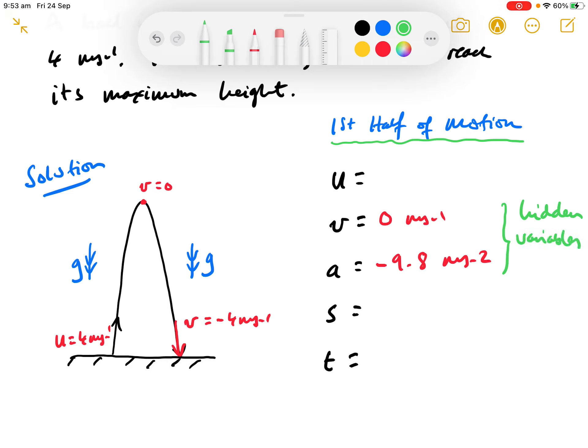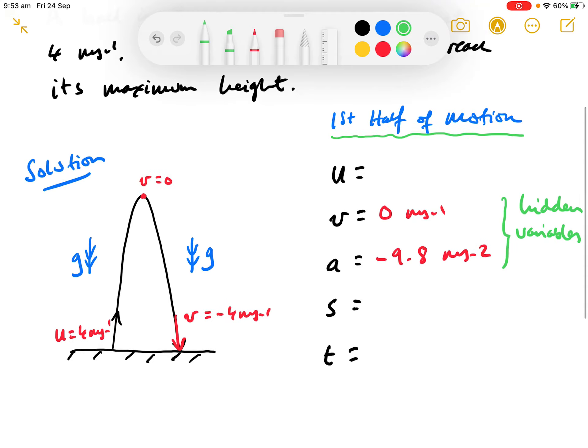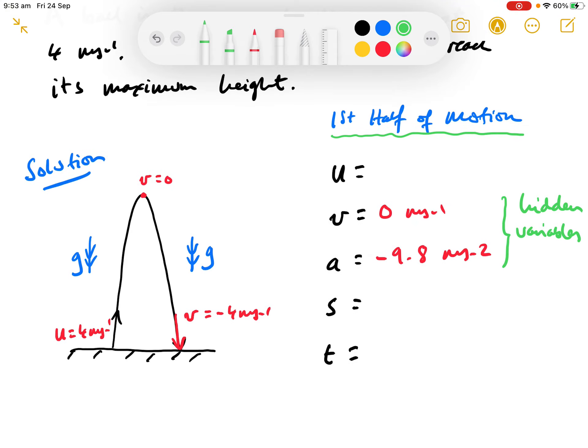Hidden in the sense that they're not given to you in the question. You are assumed to know them. Okay. And taking the first half of the motion is always quite useful, because it allows you to gain new information by setting the final velocity to be zero. So, right. All of that is hidden. What else do we know? Well, we're told it leaves at plus 4 meters per second.